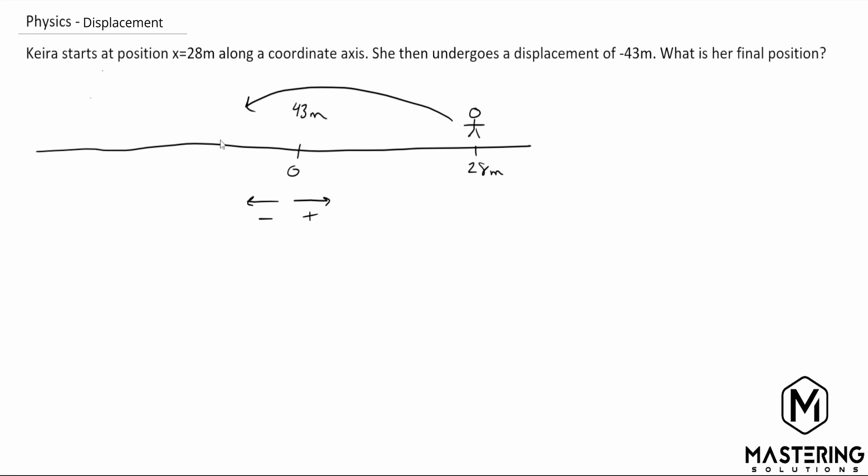But obviously they say what is her final position. We're not just going to say well she's 43 meters this way because we started out on 28. So if we take 43 and minus 28 from it we get 15. So down here we're going to be at 15. But since we passed the zero point, obviously we're not going to be at positive 15. We're going to be at negative 15.